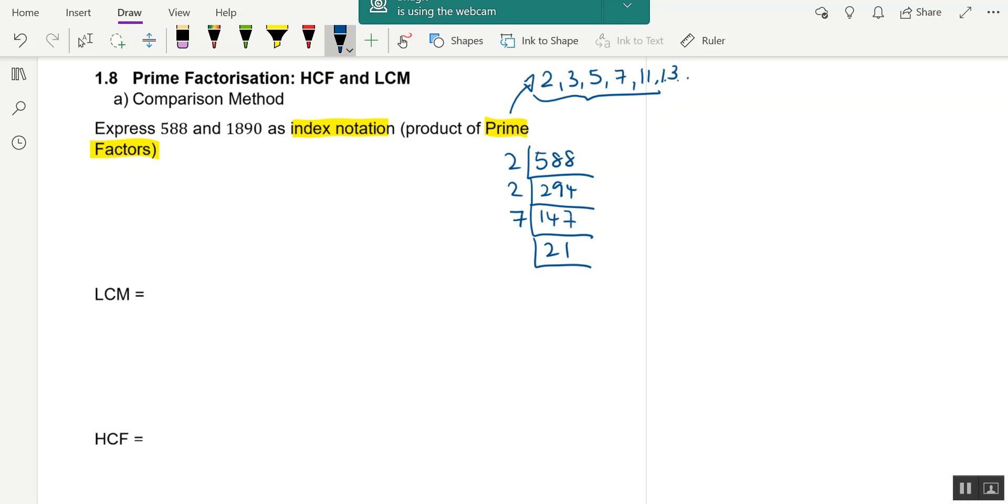That equals 21, and 21 is 3 times 7. Make sure your last number is one. Now we can say that 588 equals 2² times 3 times 7². This is how you express as product of prime factors or index notation.